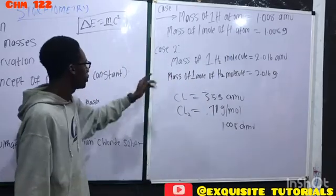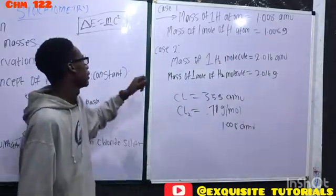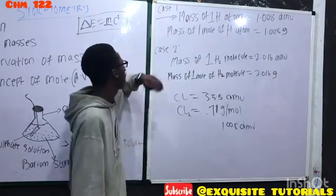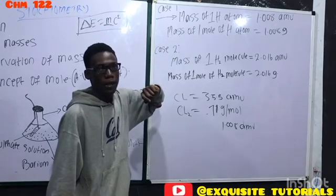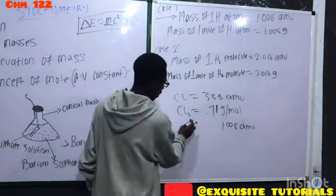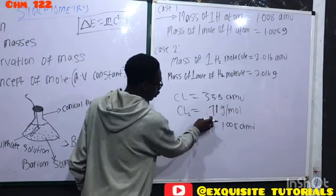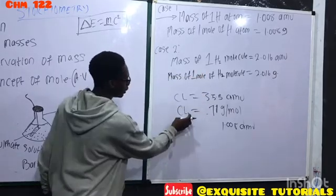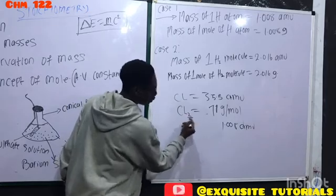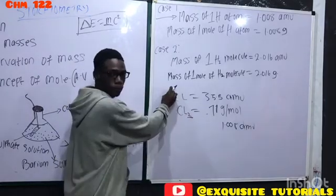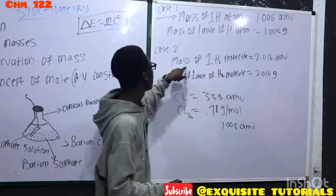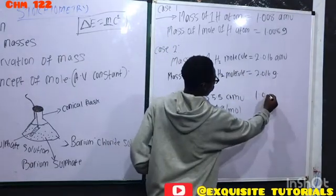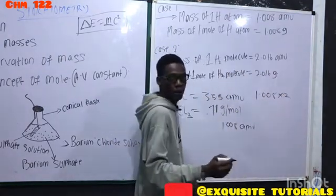In case two, we have something different. Here is a hydrogen atom, here is a hydrogen molecule. They said mass of one hydrogen molecule. With Cl₂, I have 71 instead of 35 because it's a molecule, no longer an atom.